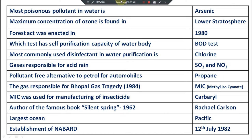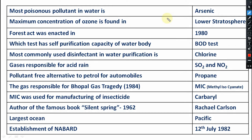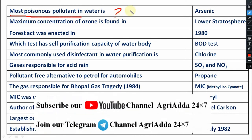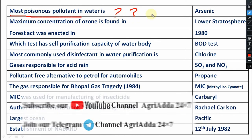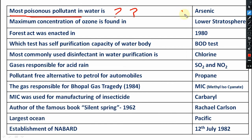The first question — very important, general agriculture and general knowledge both. Most poisonous pollutant in water: which inorganic chemical is the most polluting one in water? That is your arsenical compound. Very very important.